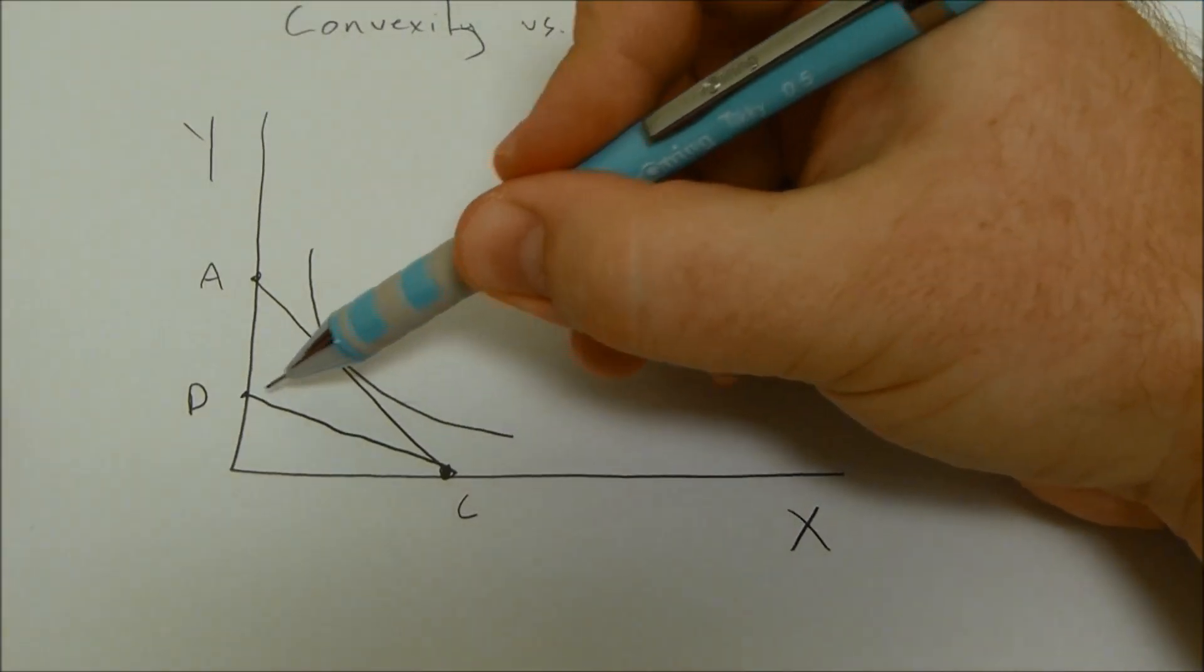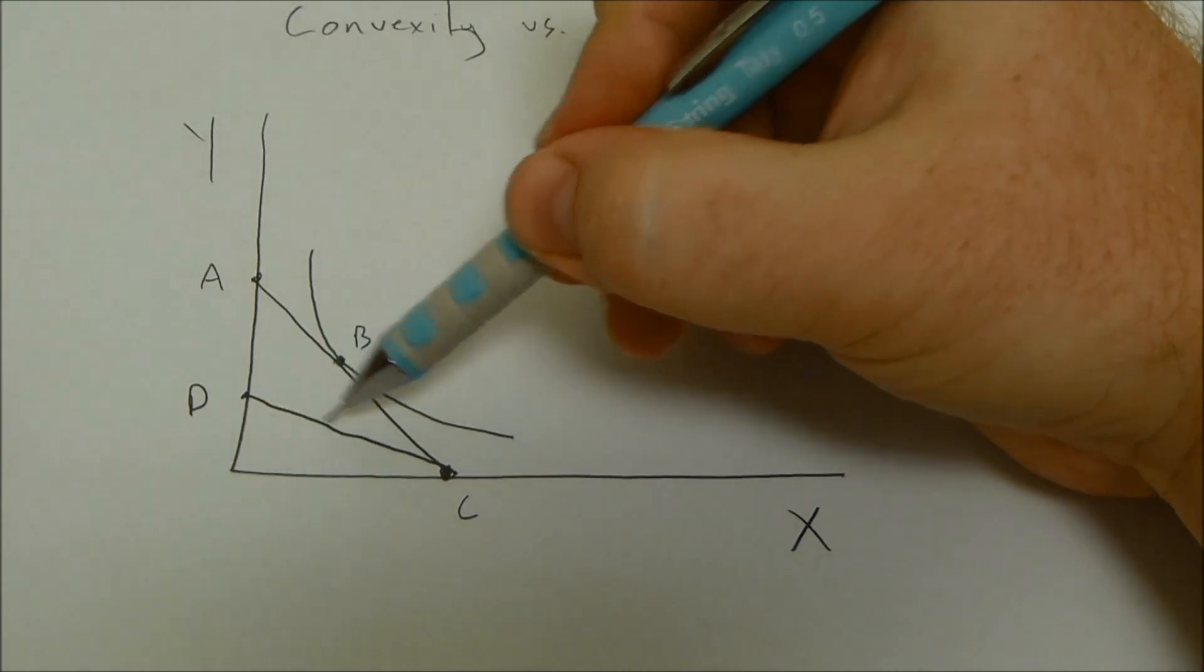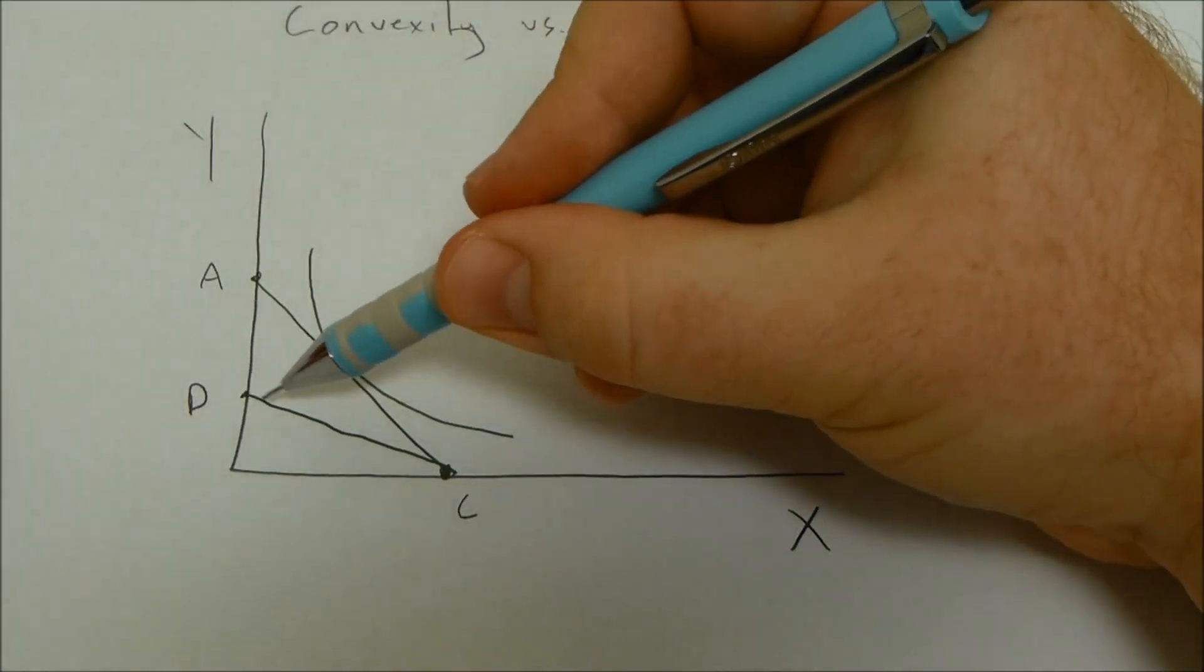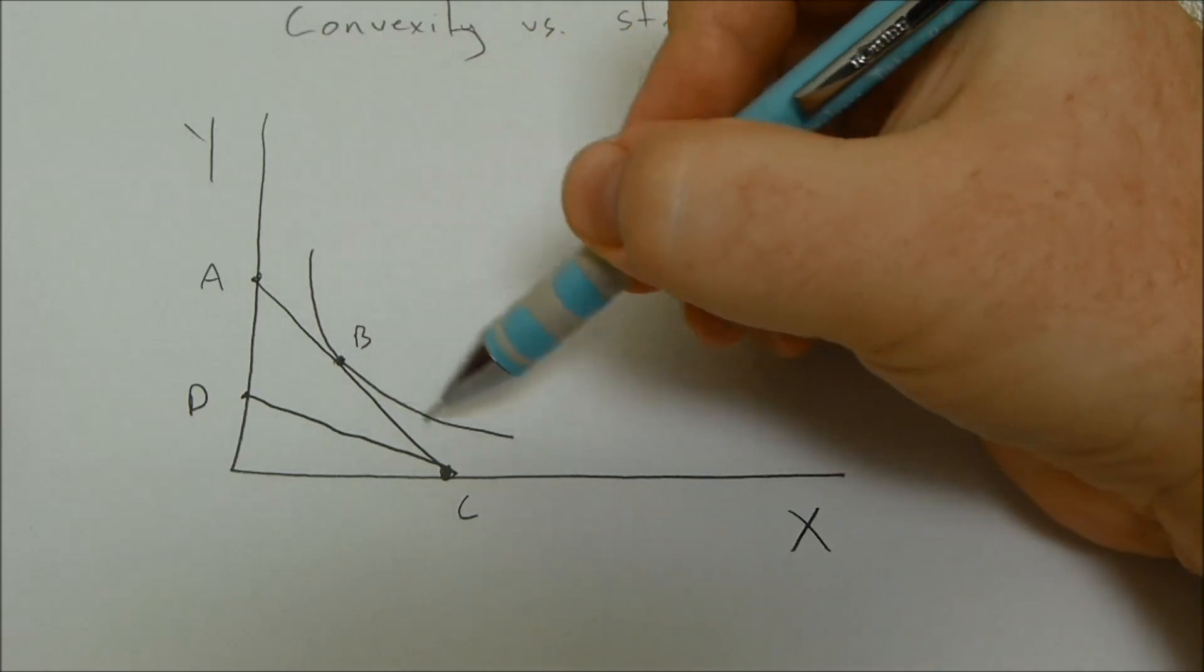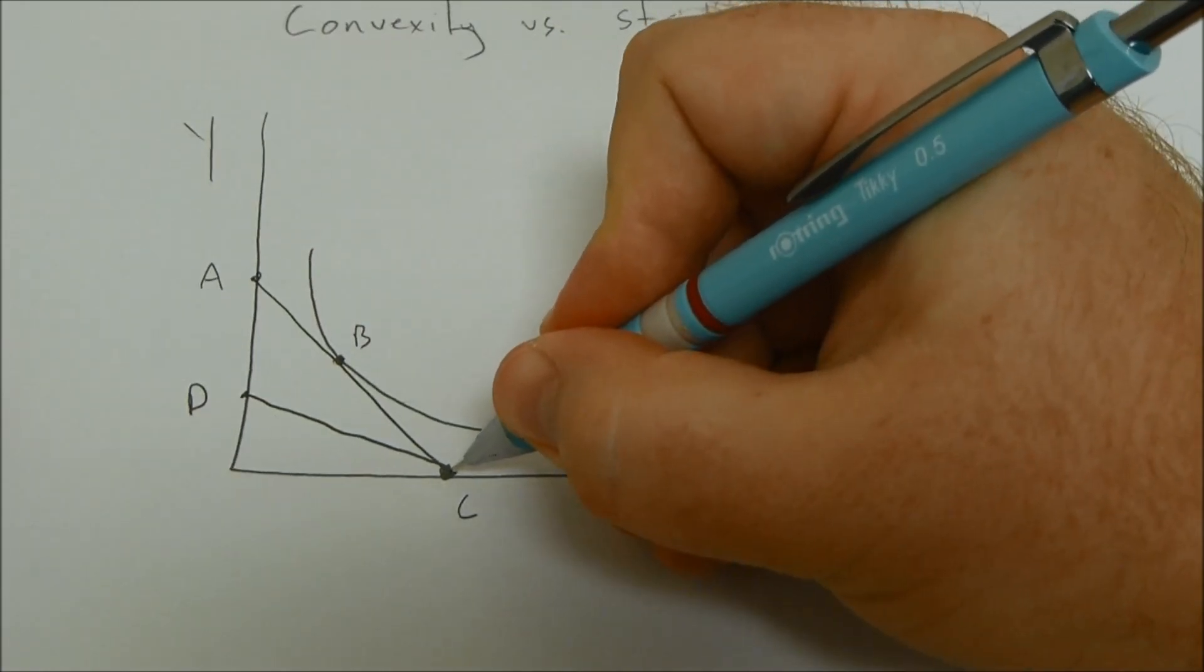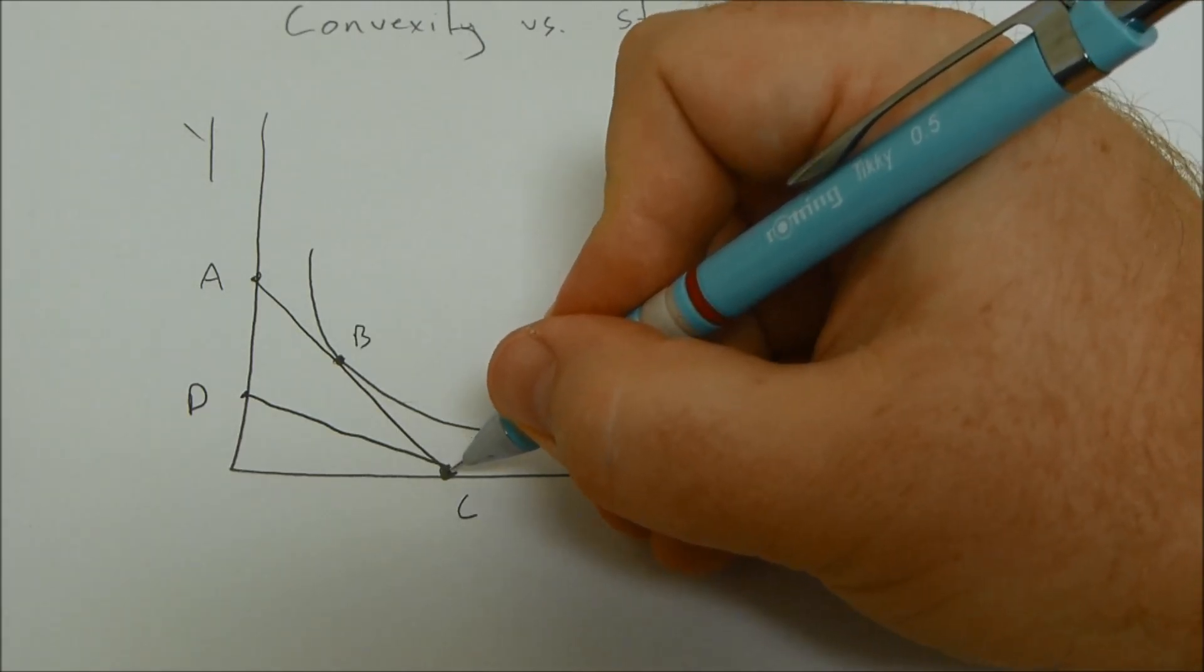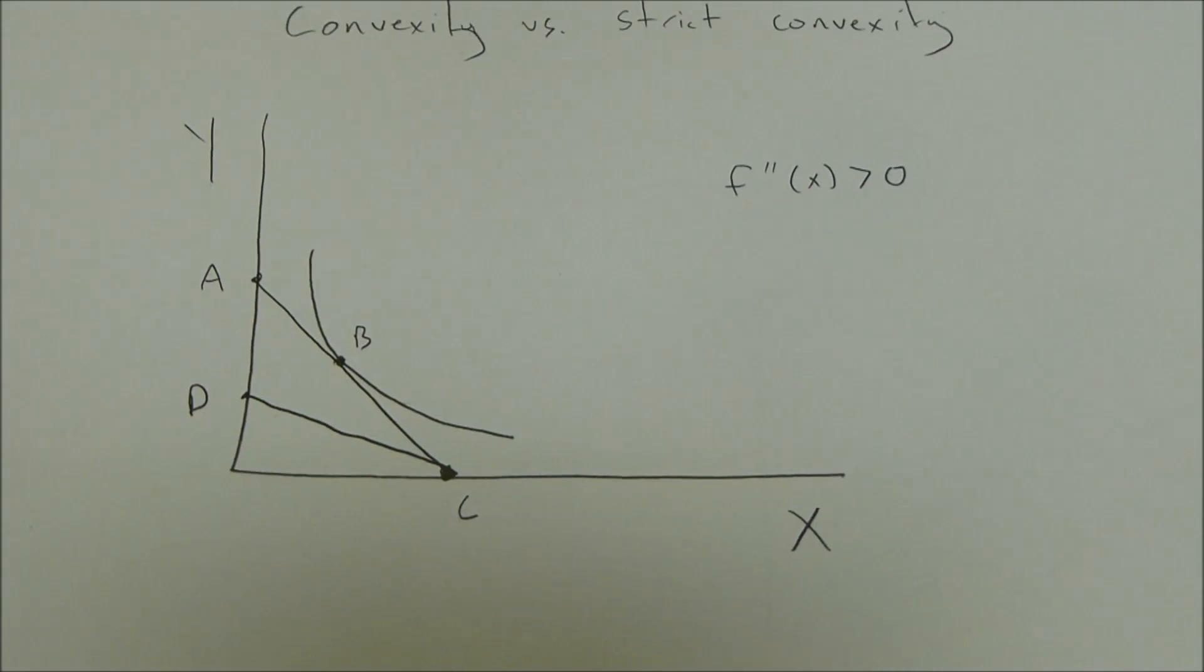If the indifference curve, say line D and C, isn't strictly convex, then it can be linear. In this example here, a linear indifference curve with a linear budget constraint line only touch at one point C, so there's still a point where they touch, they intersect, but they're not tangent. They don't share the same slope.